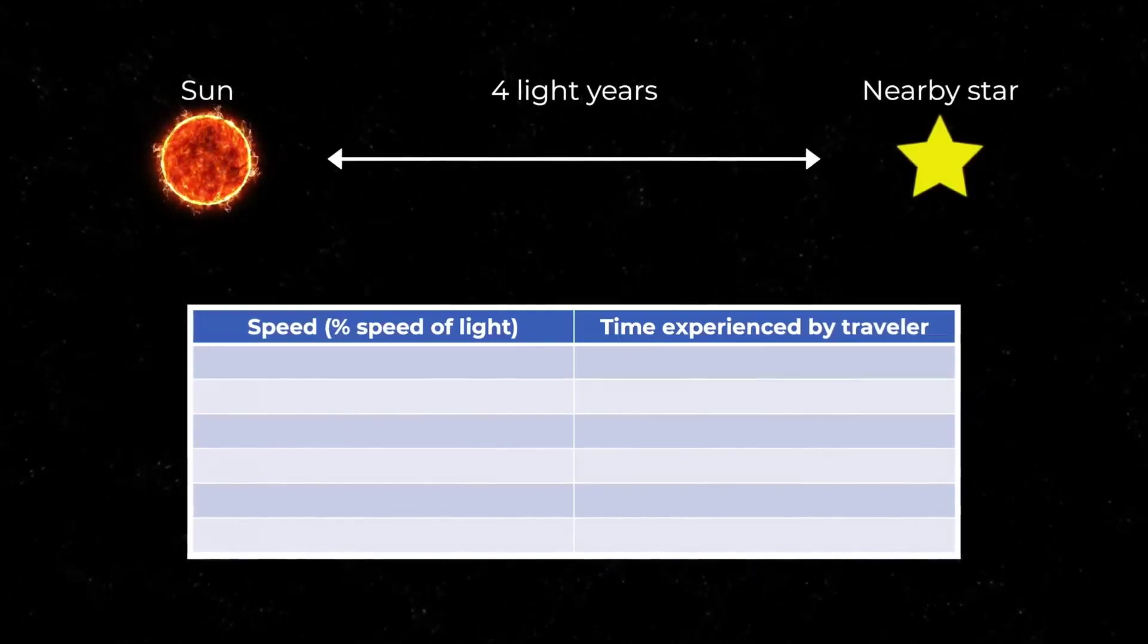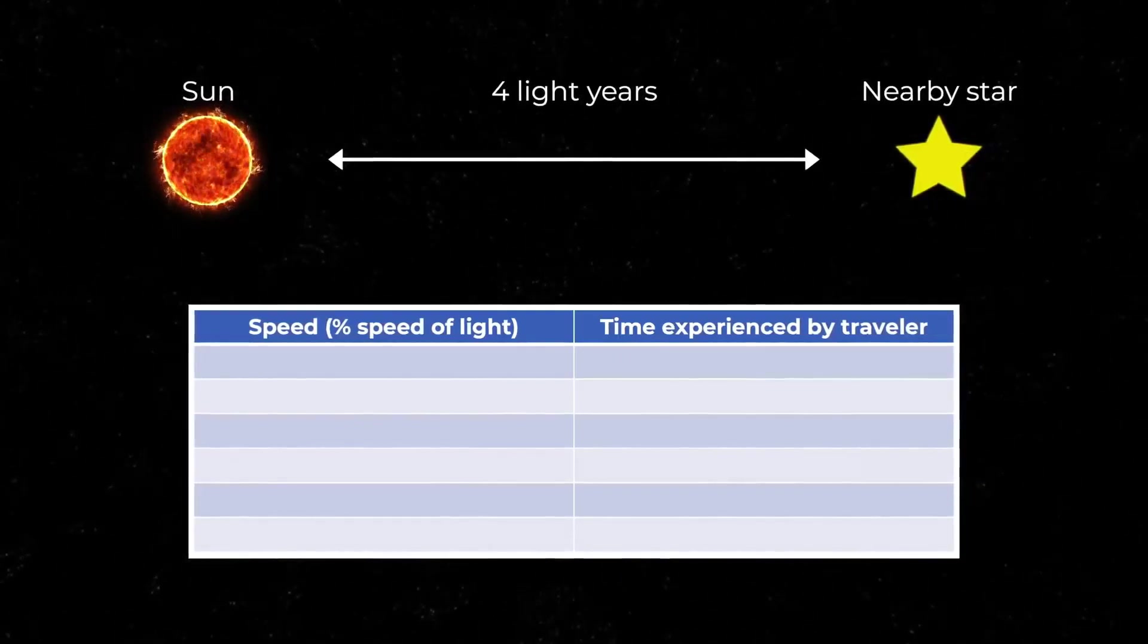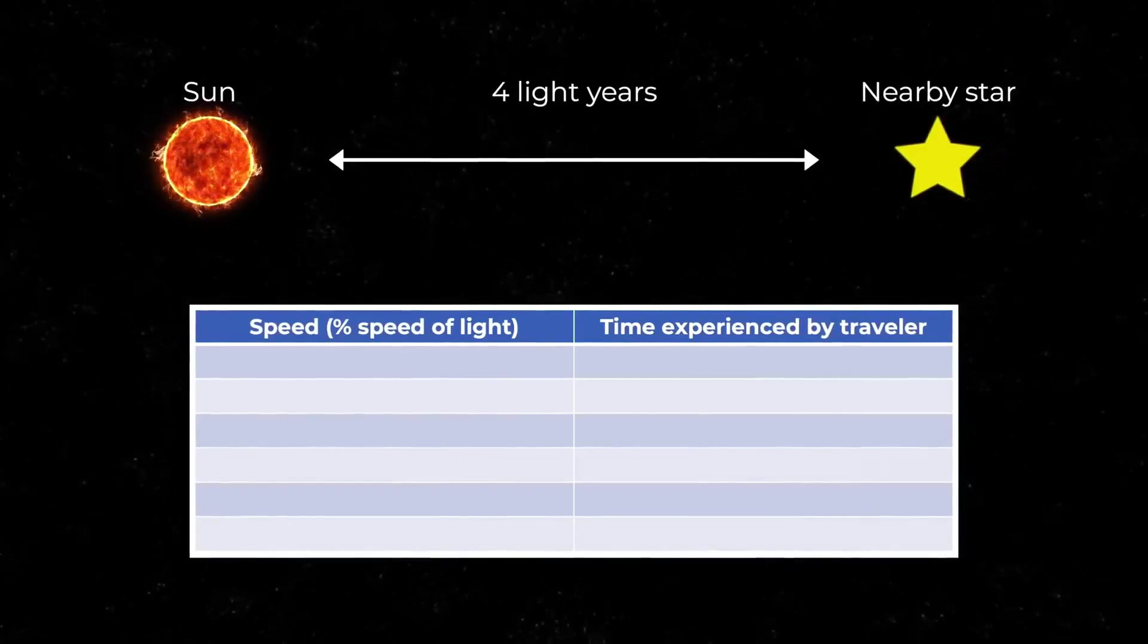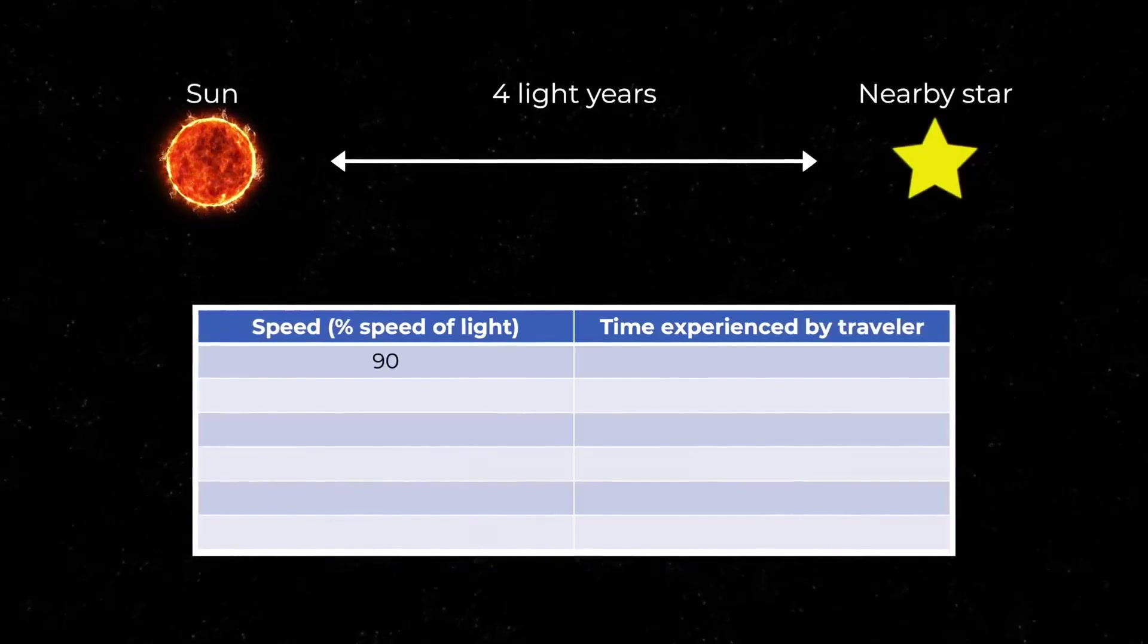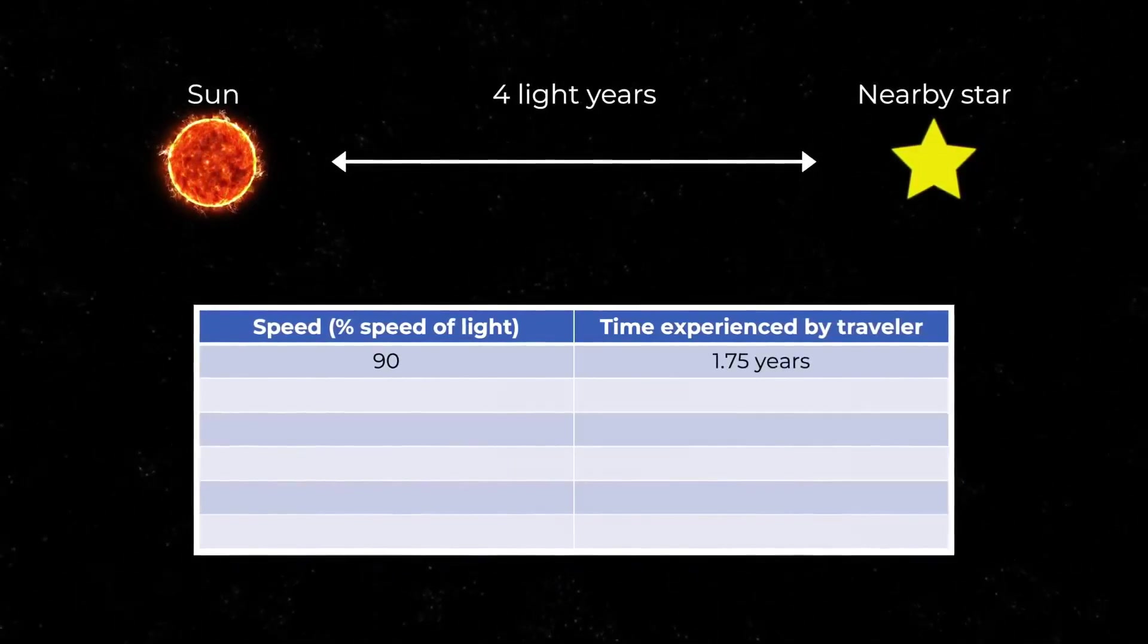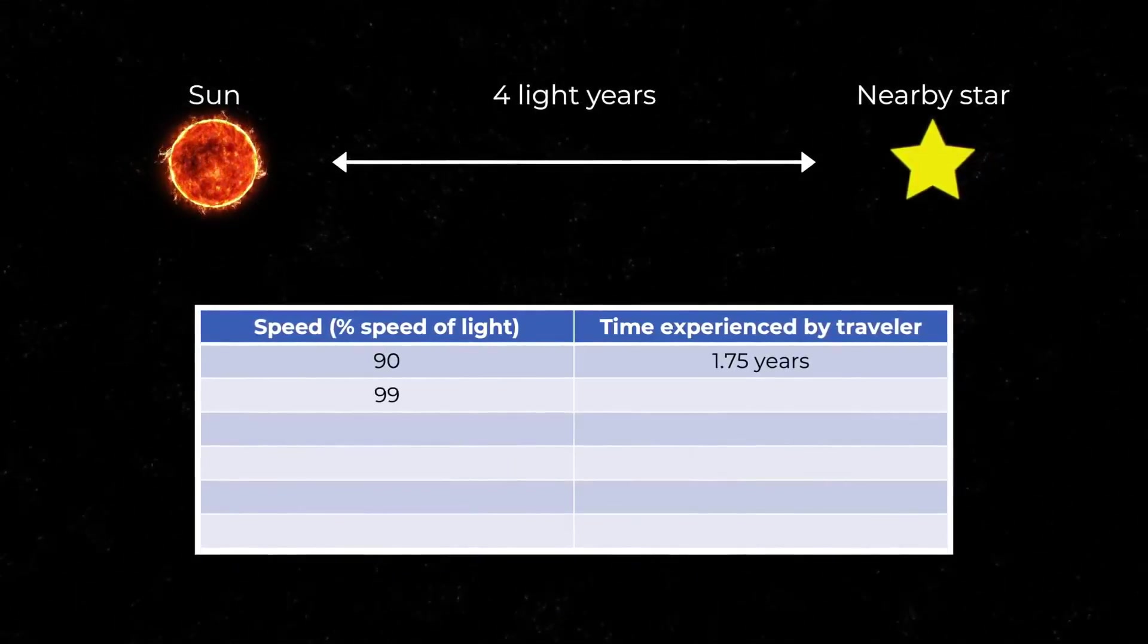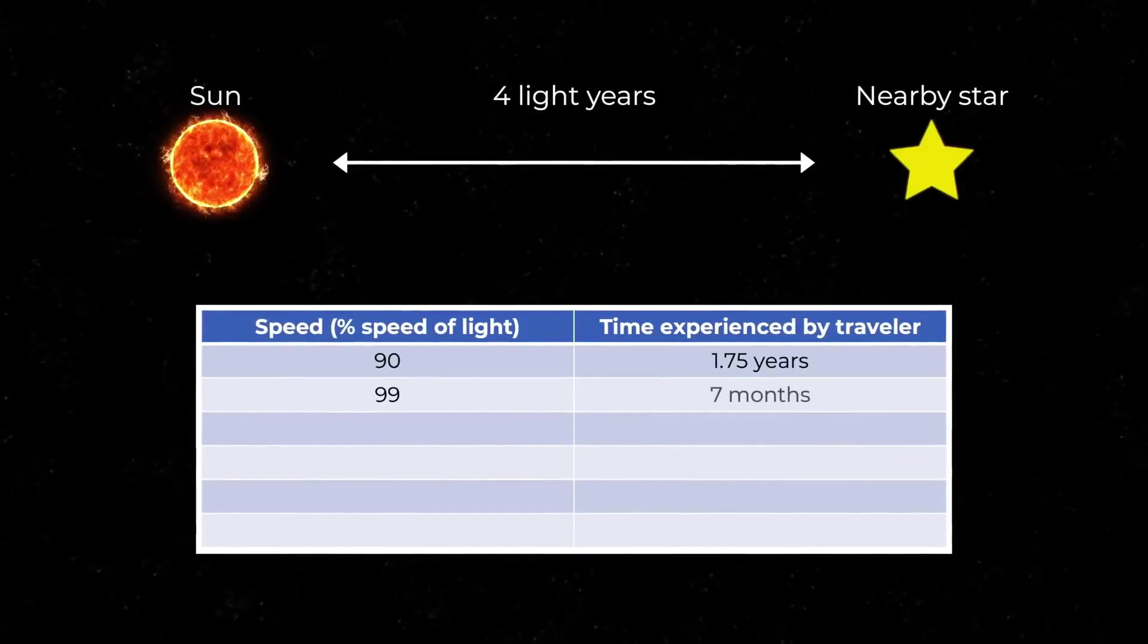The nearest star is about 4 light years away, so a person on Earth will say it takes 4 years to get there. How much time will a person traveling at 90% of the speed of light take? Roughly a year and 9 months. How about at 99% of the speed of light? A little over half a year.